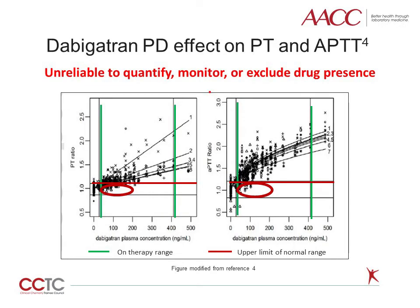These data are from a study we performed soon after Dabigatran was FDA approved. Healthy volunteers were administered therapeutic doses and peak levels were obtained. Plasma samples were evaluated with seven different commonly used PTT reagents and six PT reagents. The red horizontal line depicts the upper limit of normal for most reagents, and the vertical lines demonstrate the drug concentrations as measured by mass spectrometry. Response is reagent-dependent, with significantly more variability in PT reagents than PTT reagents. It is also important to note that time in seconds for the PTT reagents plateaus as drug concentration increases. Both PT and PTT results can be normal when individuals have therapeutic concentrations of Dabigatran in their blood.